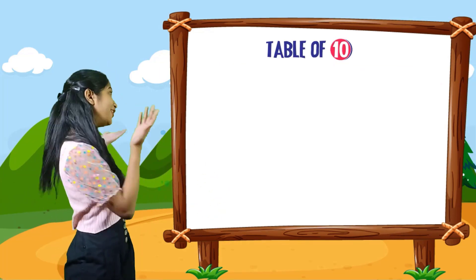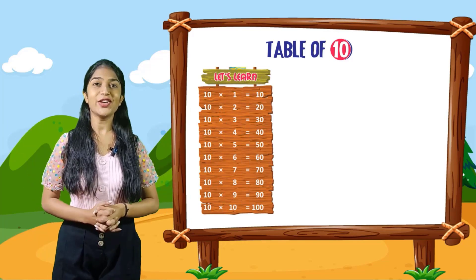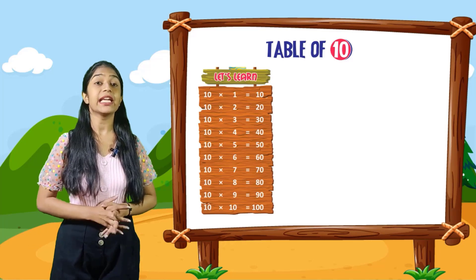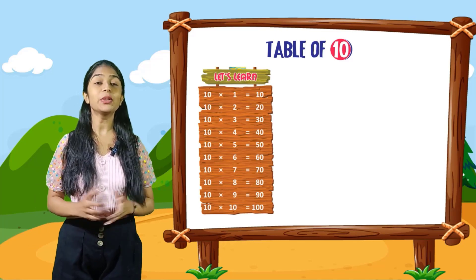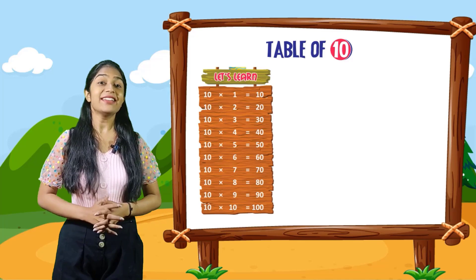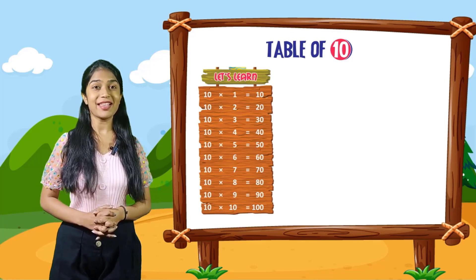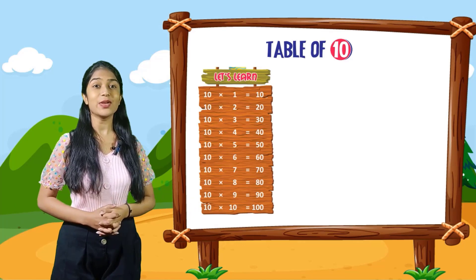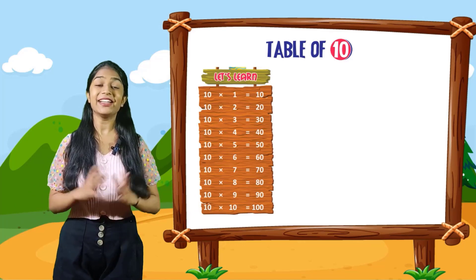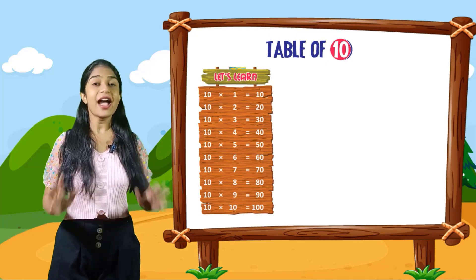So kids, now we will do the table of 10. Let's learn. 10 into 1 is equal to 10. 10 into 2 is equal to 20. 10 into 3 is equal to 30. 10 into 4 is equal to 40. 10 into 5 is equal to 50. 10 into 6 is equal to 60. 10 into 7 is equal to 70. 10 into 8 is equal to 80. 10 into 9 is equal to 90. 10 into 10 is equal to 100.